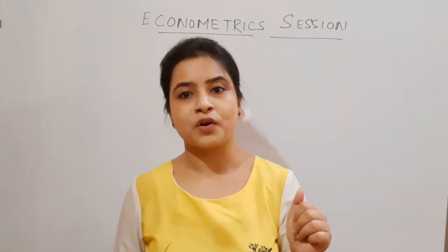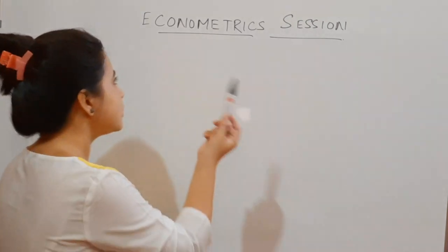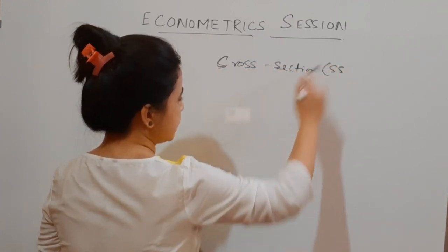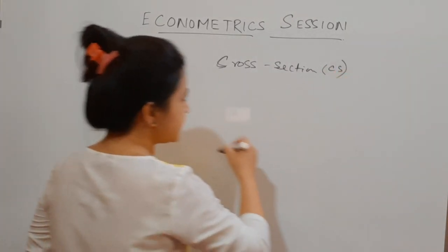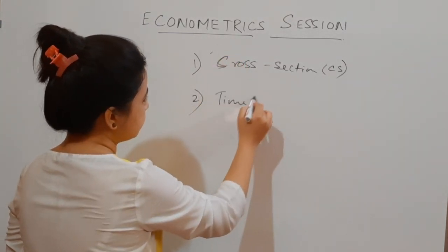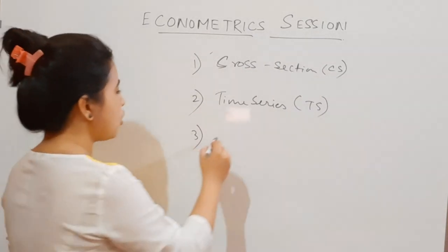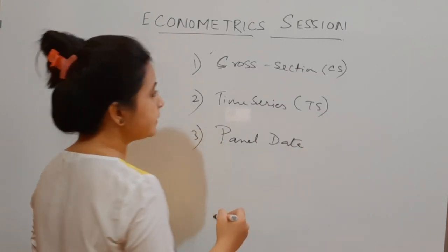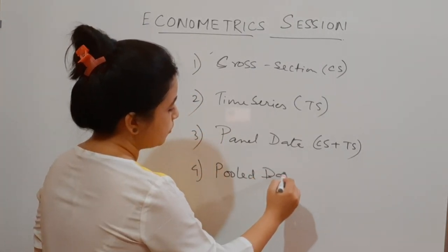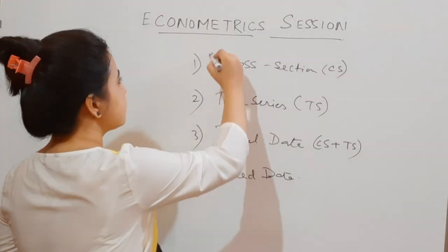In econometrics, we know there are broadly three types of data sets. One is cross-section data set, written in short form as CS data. Then we have the time series data, known as TS. And third, we have panel data, where we have cross-section as well as time series data. Of course, the next set is the pooled data set.